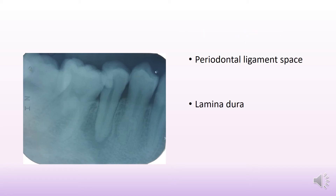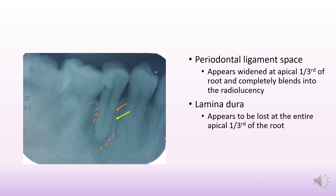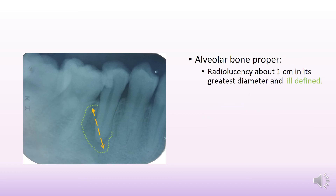Moving on to the periodontal ligament space and lamina dura — it is glaringly visible that there is a periapical radiolucency. The PDL and lamina dura are not continuous. The orange arrow points to the black line indicating the PDL, but you cannot demarcate the PDL at the apical one-third. The yellow line indicates the lamina dura, which is fairly thickened in the middle third of the root, but at the apical one-third there is discontinuity — almost a loss of lamina dura and PDL.